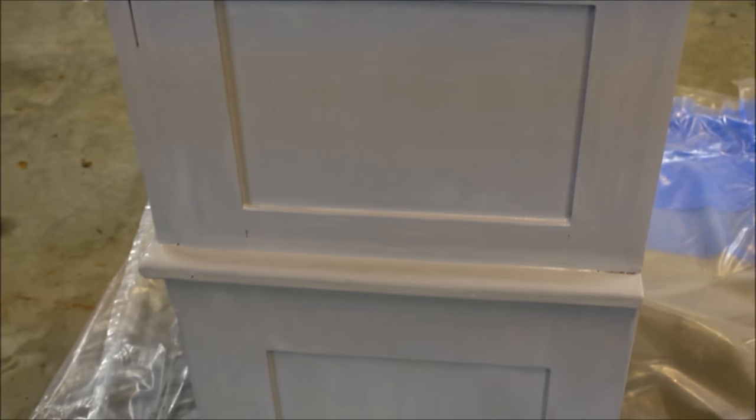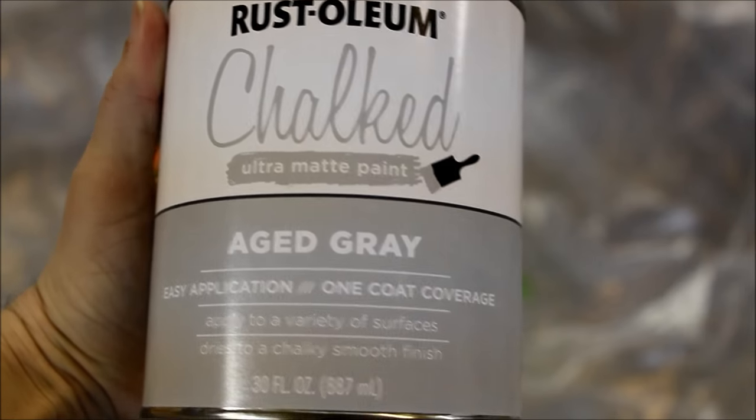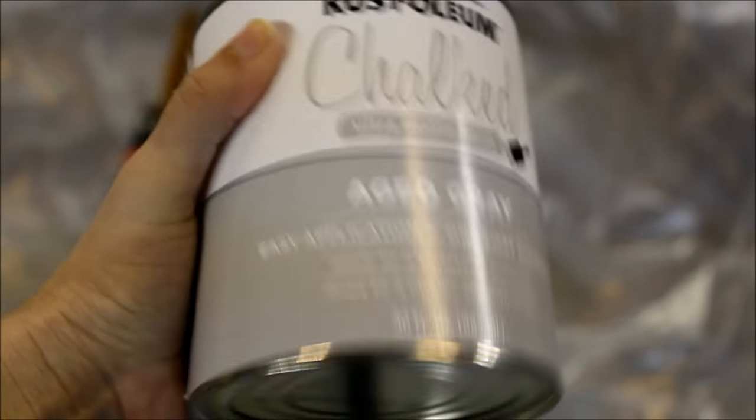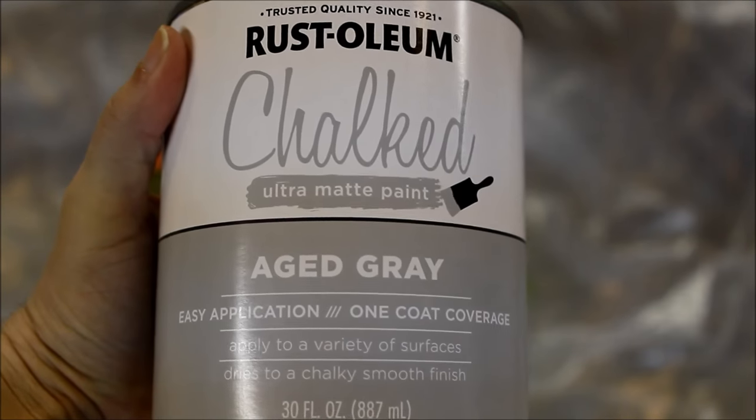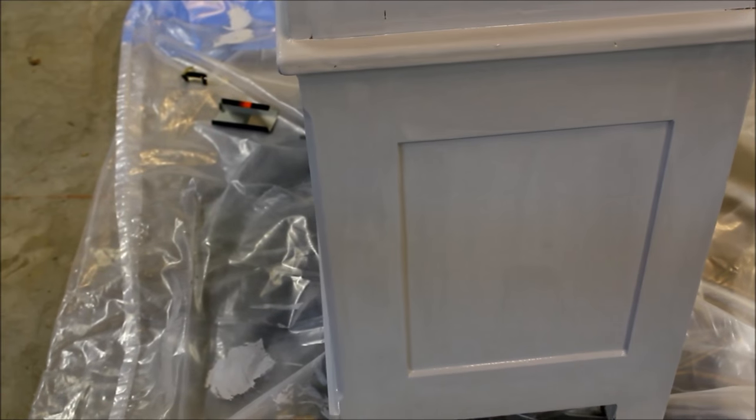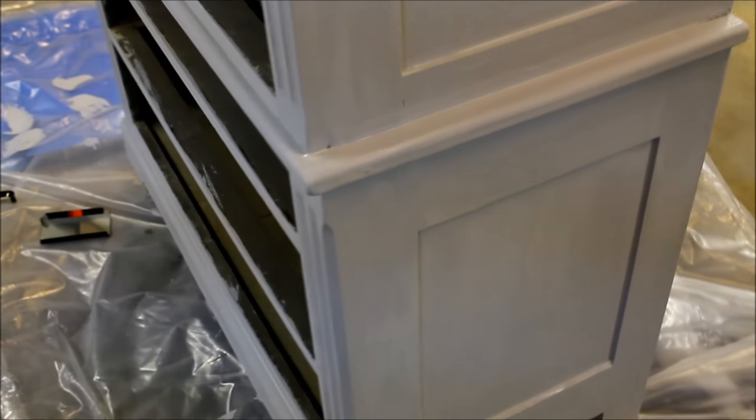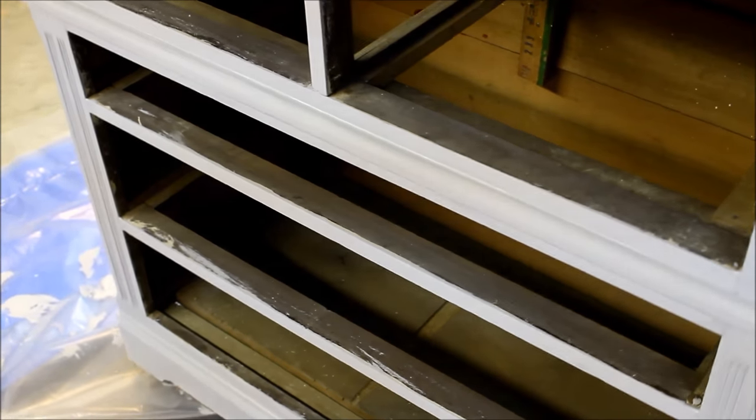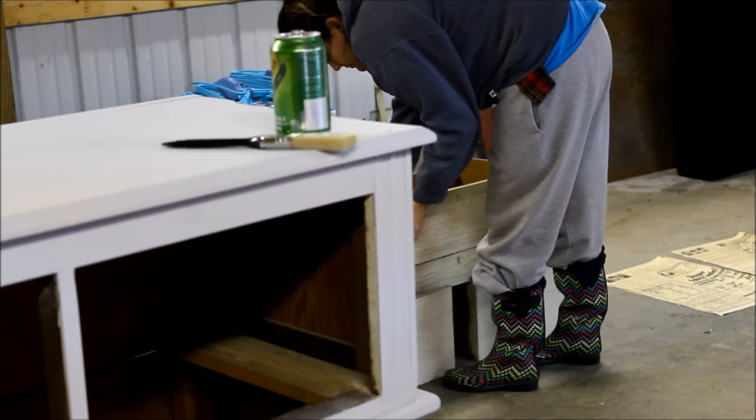So once I gave this whole thing a rough sanding, I took my chalk paint. I used Rust-Oleum Aged Gray. This is not a sponsored video. This is just the product I used, so I'm showing you it. I took the aged gray chalked paint. This is about 16 bucks. Got it from Home Depot. Shout out to Home Depot. Not a sponsor, but you could be. Call me. No, I'm just kidding. And I put one coat on the whole piece and that's about it. I put a whole coat on the whole piece and I let it dry overnight.